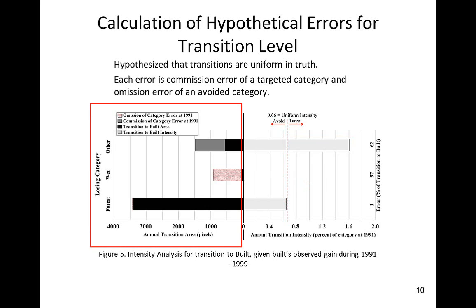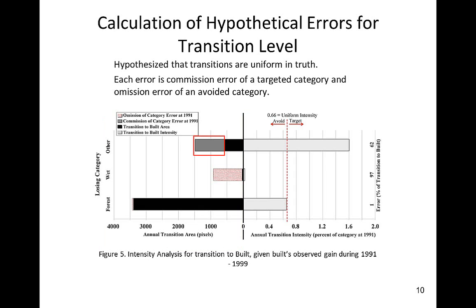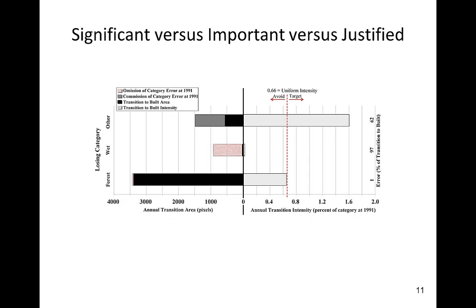The left side of the figure shows the hypothetical error in each category at 1991 that could explain the observed deviations from the uniform line. For transitions that target, we hypothesize that there is commission error in the losing category at 1991 within the region where built gains. For example, built's targeting of other could be due to the map of 1991 showing more than the correct amount of other. For transitions that avoid, we hypothesize that there is omission error in the losing category at 1991 within the region where built gains. For example, built's gain apparently avoids forest, but this could be due to the map of 1991 showing less than the correct amount of forest. All pixels of error are simultaneously commission of a targeted category and omission of an avoided category within the region of built's gain.